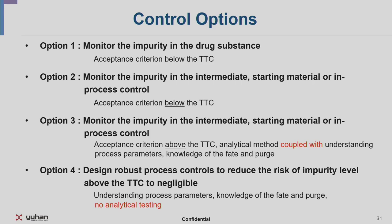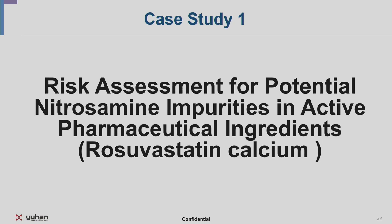To summarize the control options: Option 1 monitors impurities in the drug substance with an acceptance criterion below the TTC. Option 2 monitors impurities in the intermediate, starting material, or in-process control with an acceptance criterion below the TTC. Option 3 is similar to option 2 but monitors in the intermediate or starting material with the acceptance criterion above the TTC, requiring analytical method coupled with process parameter understanding and knowledge of fate and purge. Option 4, instead of analytical testing, involves designing robust process controls to reduce the risk of impurity level above the TTC to be negligible.